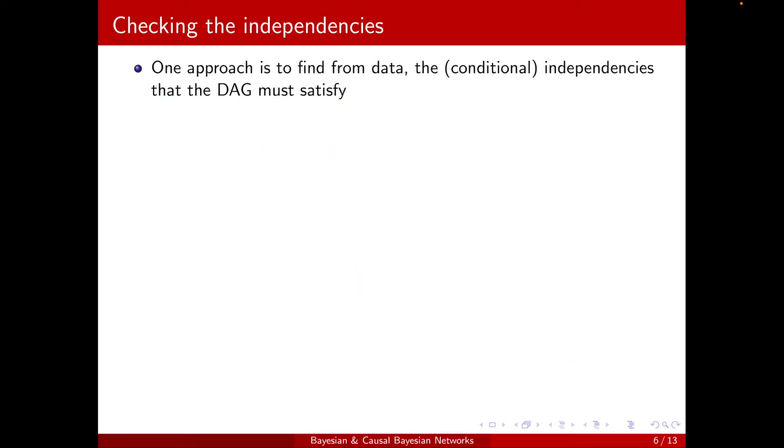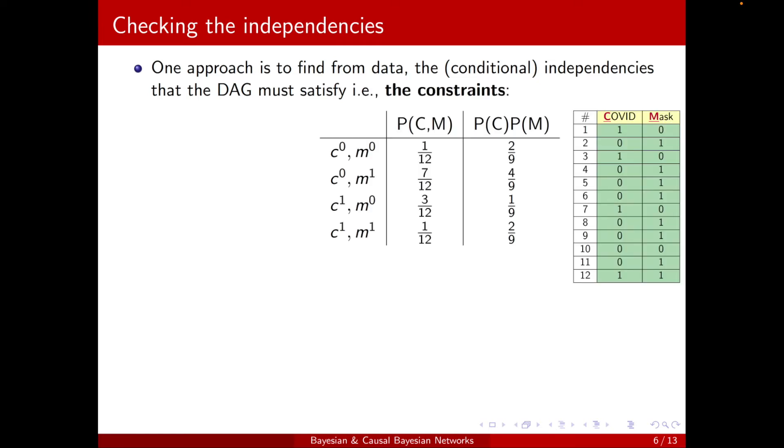Okay, so one approach is to find from data the conditional independencies that the DAG must satisfy. And we mainly covered this in the representation chapter.